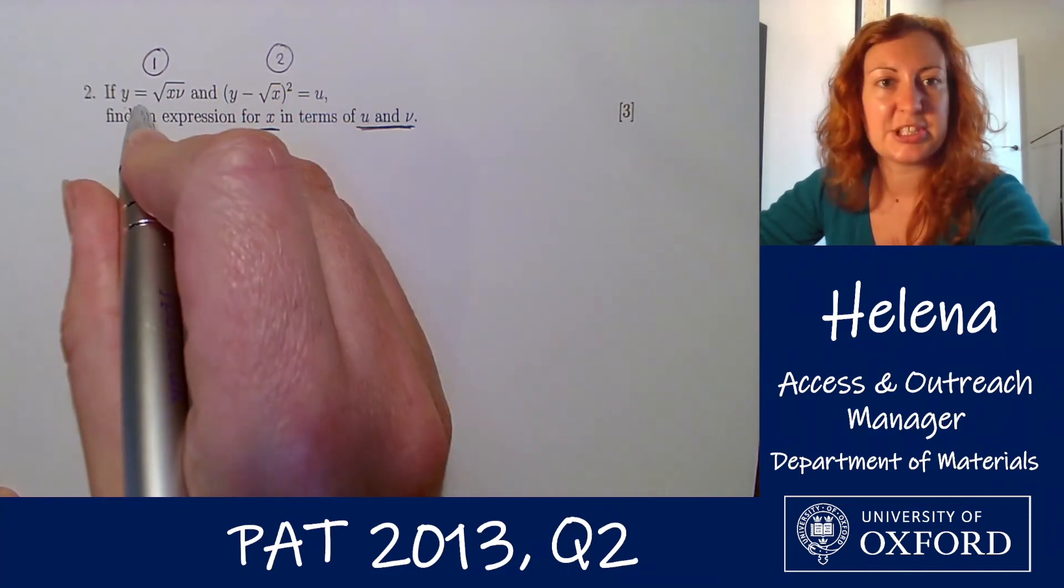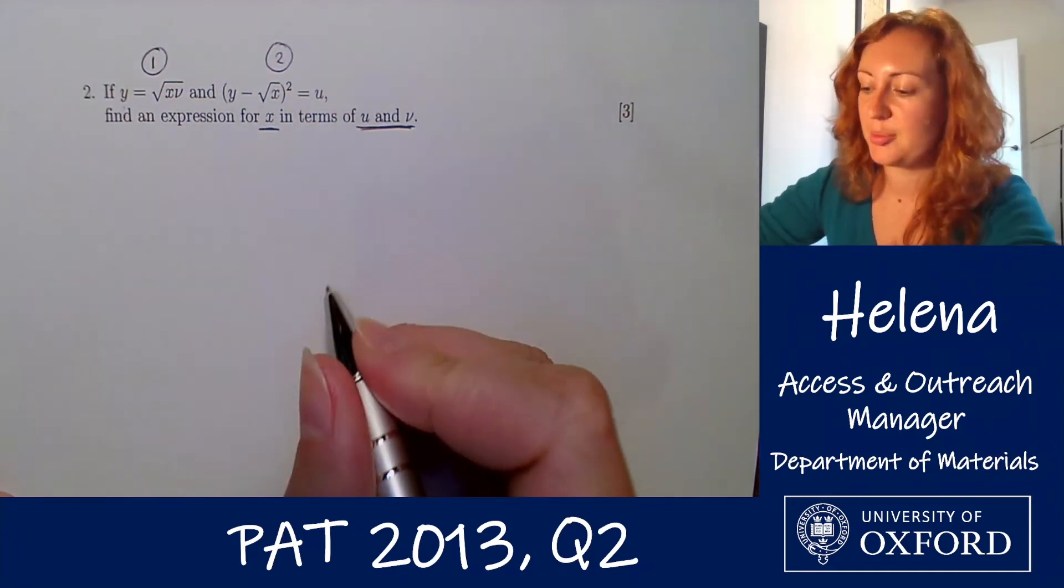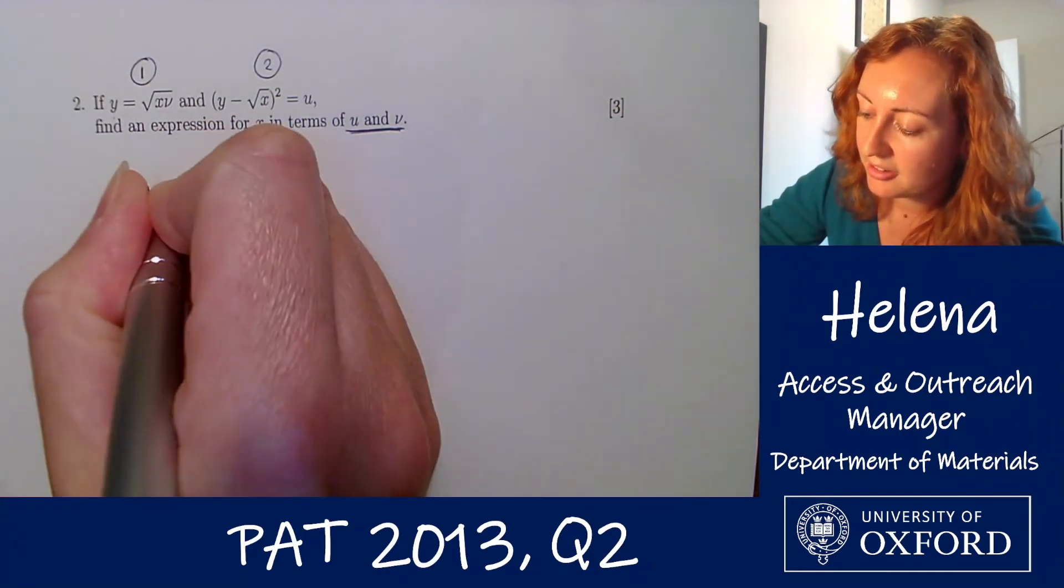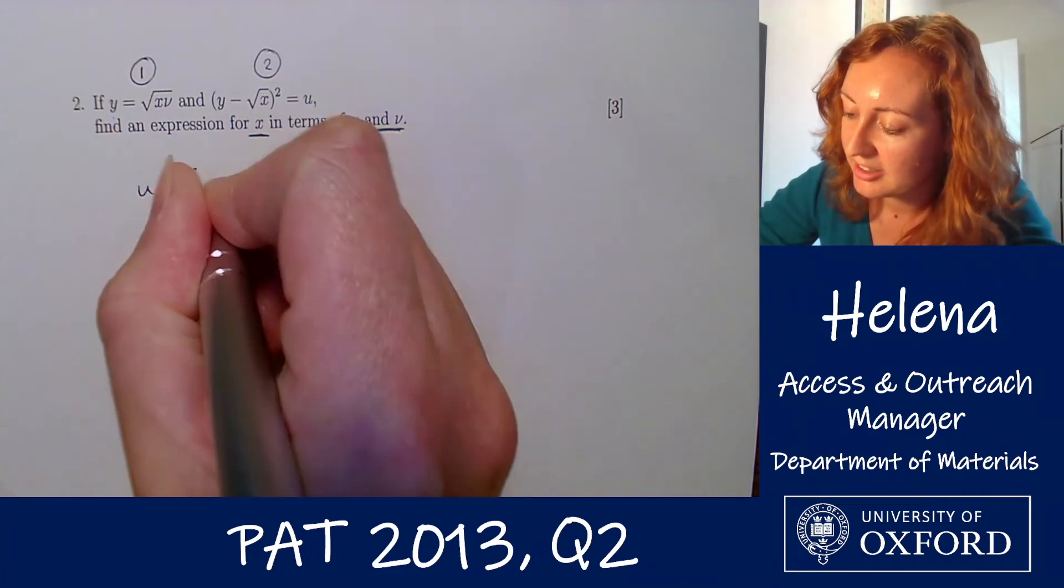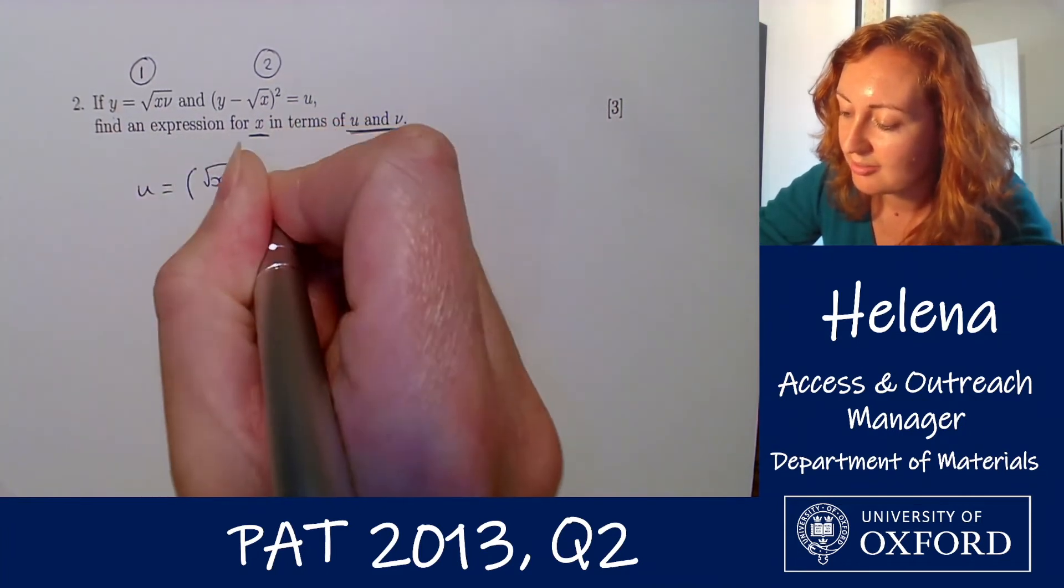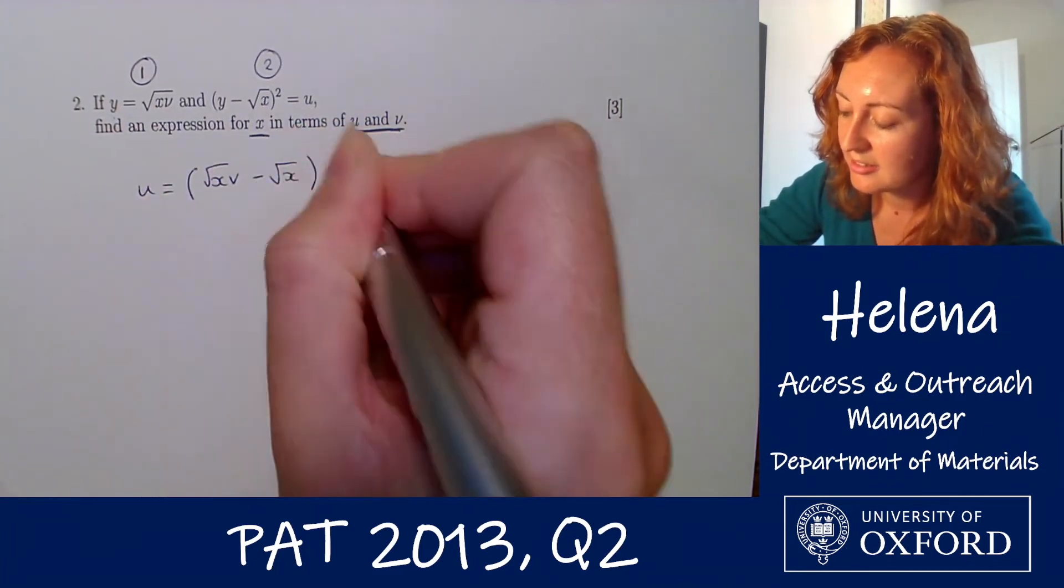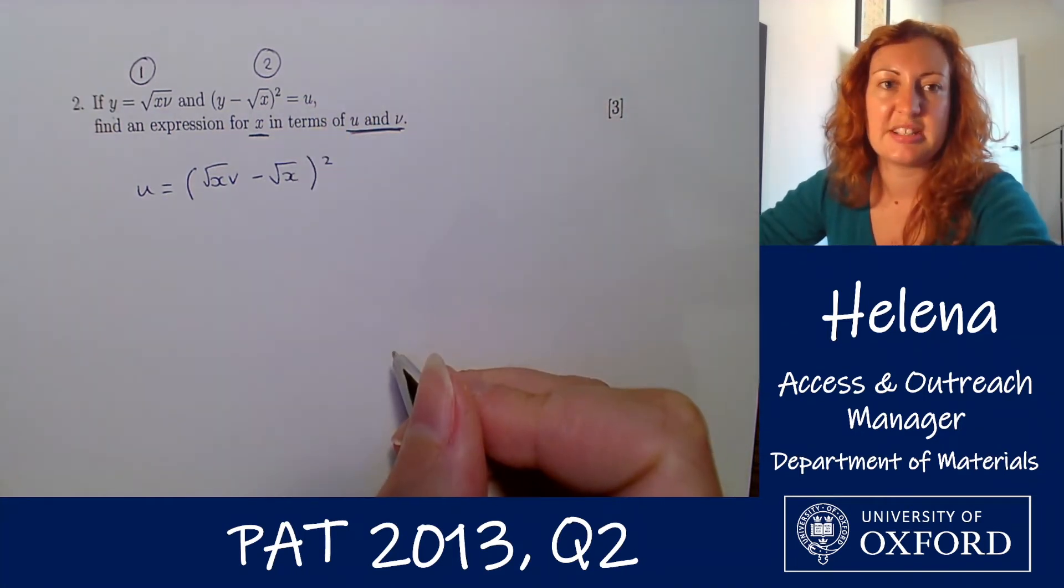So if we are to substitute this into equation number two, we would get an equation for u which looks something like root x v minus root x all squared. So now we've eliminated y.